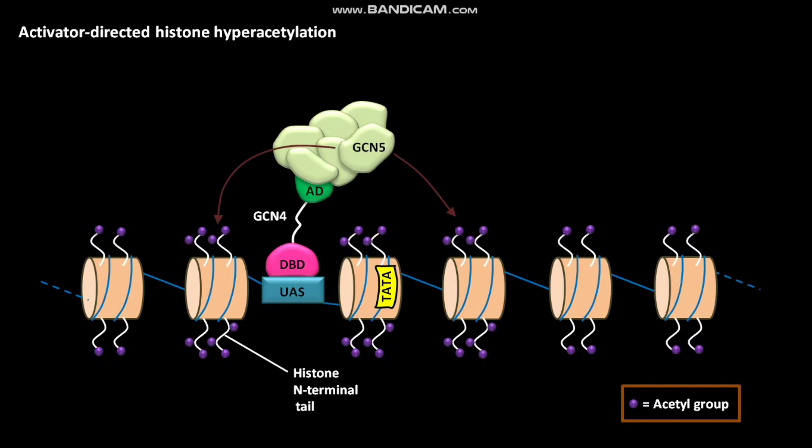The GCN5 then causes hyperacetylation of histone N-terminal tails on the nucleosome. This hyperacetylation occurs in the vicinity of GCN4 binding site. Due to this hyperacetylation,